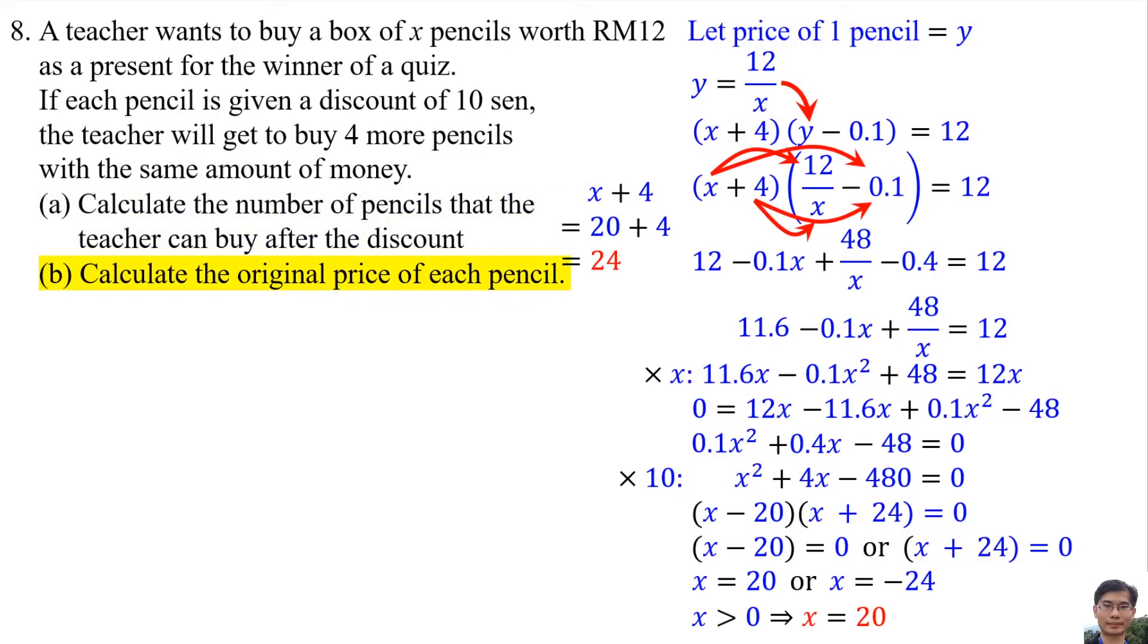Calculate the original price of each pencil. It means find the value of Y. X is 20, so Y is 0.6. The original price of each pencil is 60 cents.